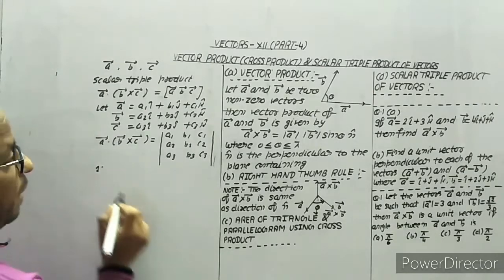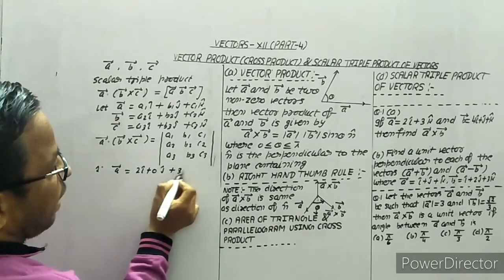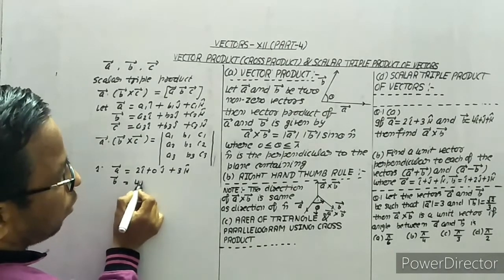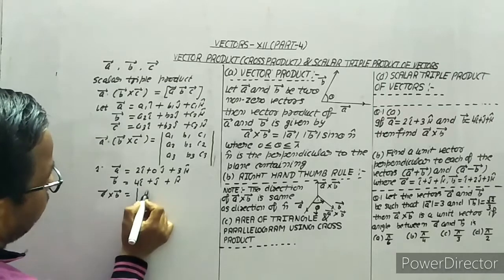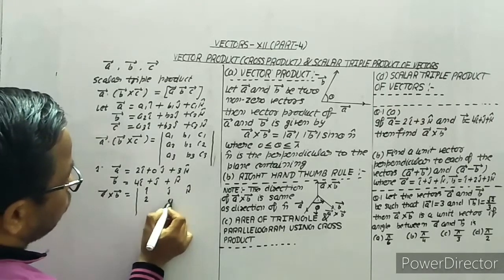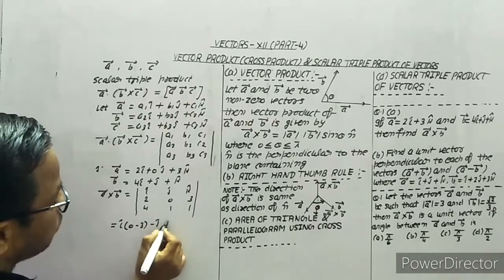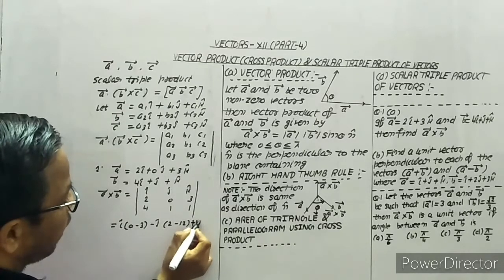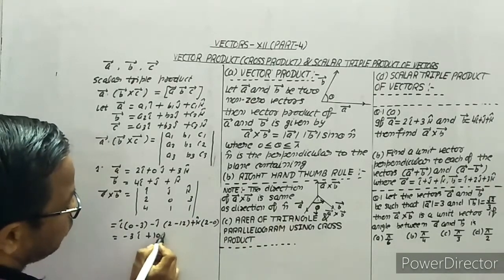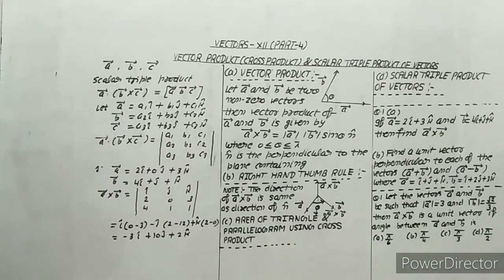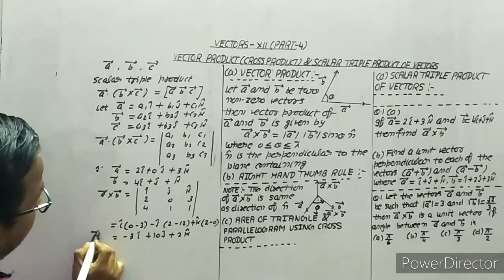Now let's solve some questions. If vector a equals 2i + 0j + 3k and vector b equals 4i + j + k, find a cross b. Set up the determinant with rows [i, j, k], [2, 0, 3], [4, 1, 1]. This gives: i-cap(0·1 minus 3·1) minus j-cap(2·1 minus 3·4) plus k-cap(2·1 minus 0·4), which equals minus 3i plus 10j plus 2k.